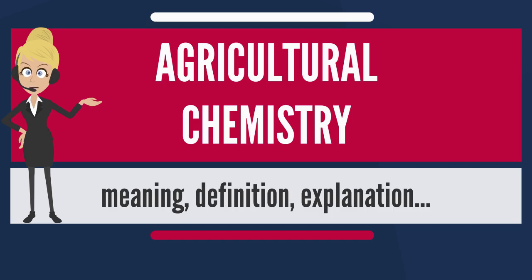Every scientific discipline that contributes to agricultural progress depends in some way on chemistry. Hence agricultural chemistry is not a distinct discipline, but a common thread that ties together genetics, physiology, microbiology, entomology, and numerous other sciences that impinge on agriculture.